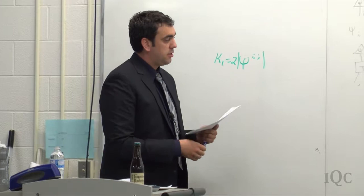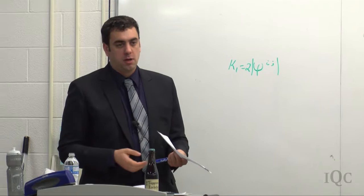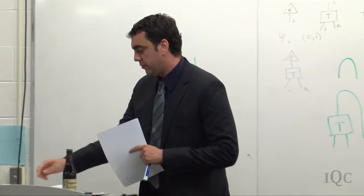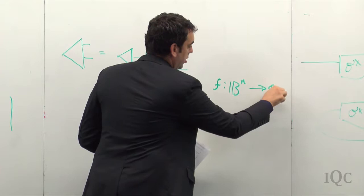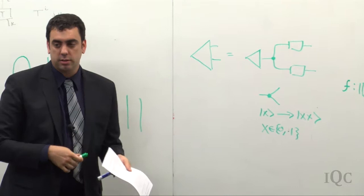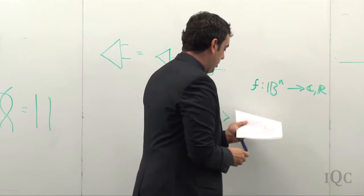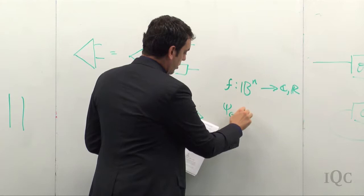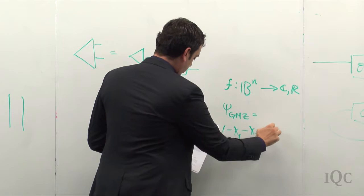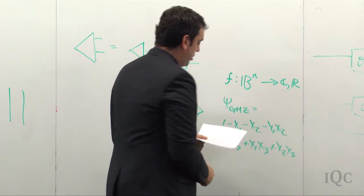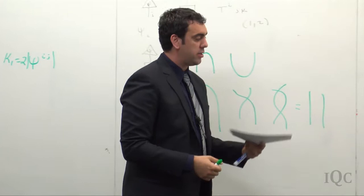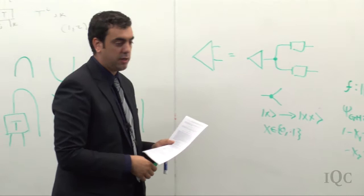In addition to Boolean functions, we talked about multilinear forms, also called pseudo-Boolean forms — generalizations of Boolean functions. These are maps F from Boolean numbers to C or R, and they have very clear structure. An example for the GHZ state would be written as 1·x1 − x2 − x1·x2 − x3 + x1·x3 + x2·x3. This is the normal form — expanding everything in a specific way gives one unique pseudo-Boolean form for every function. This one represents GHZ.